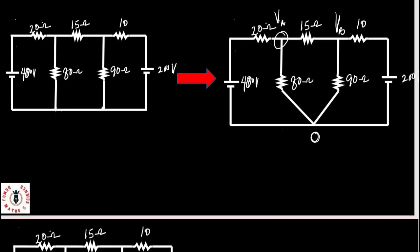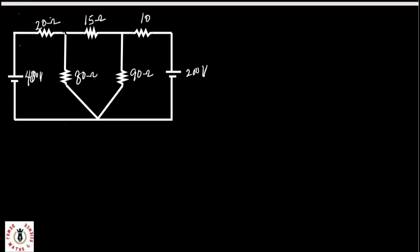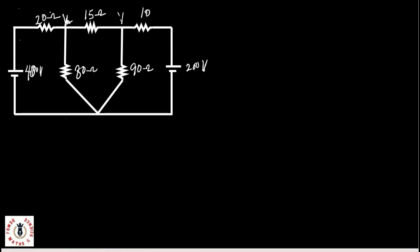Now let's begin to pick our currents. This is node A with VA, here's node B with VB, and here is the reference node. Now if I have current flowing through the 400-volt cell, we can tag that as I1. It gets to this junction, then at this point I can have my I2, here I can tag this I3, while from here I can tag this I5, so that I'll tag the one flowing in this line here as I4.